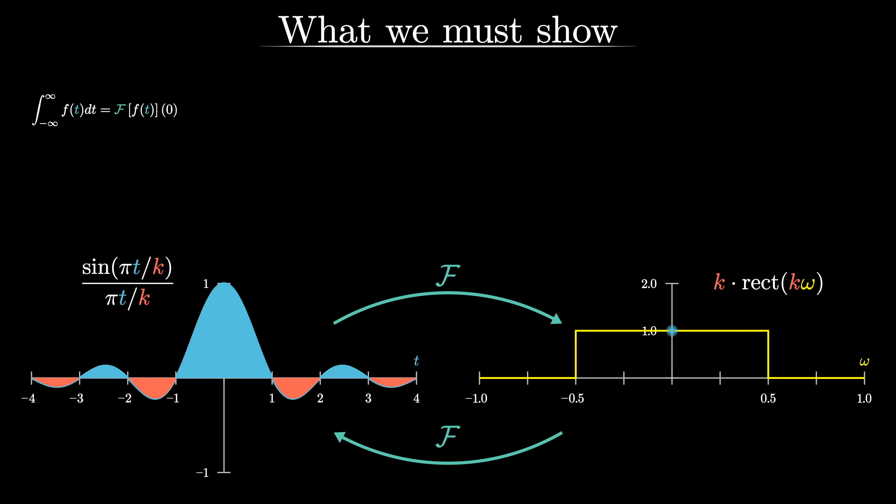In our specific case, it means if you believe me that this sinc function and the rect function are related with a Fourier transform like this, it explains the integral, which is otherwise a very tricky thing to compute because it's saying all that signed area is the same thing as evaluating rect at zero, which is just one.